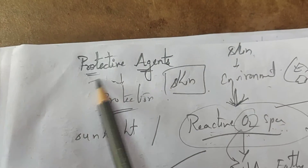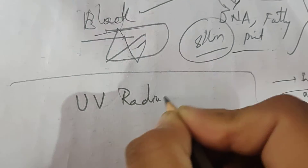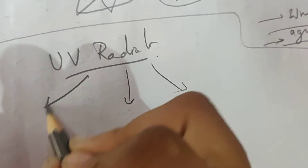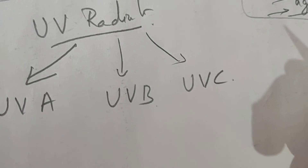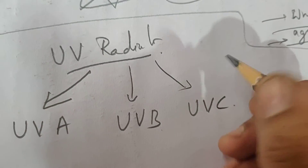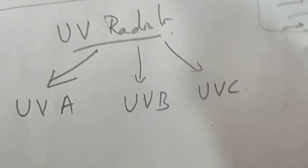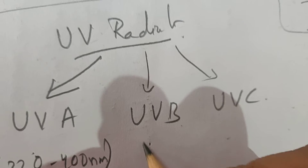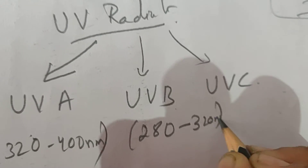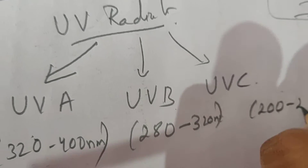To prevent reactive oxygen species from forming, we need protective agents. Regarding solar ultraviolet radiations — UV radiations — these are divided into three categories: UVA, UVB, and UVC, according to their wavelengths. UVA is found in the wavelength range of 320 to 400 nanometers, UVB from 280 to 320 nanometers, and UVC from 200 to 280 nanometers.